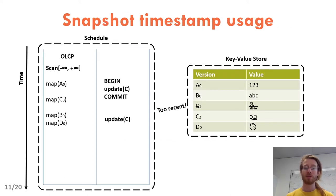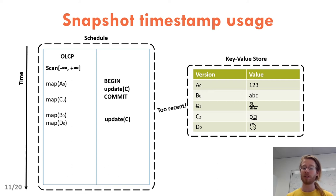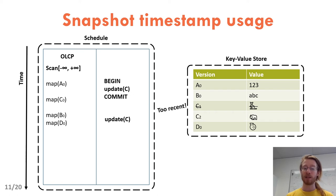OLCP queries use the timestamp of their snapshot to avoid propagating the same item twice. In this example, an OLCP query scans the entire store and C is updated concurrently. After the first update, the first version of C, C0, is propagated to the OLCP query, processed, and then deleted. Then the store only contains the newest version of C, C1. If C is updated again, C1 is not propagated because it is too recent for the OLCP query — we can find this easily by comparing the timestamp of the OLCP query's snapshot and the timestamp of C1. The same operation is done when scanning: when the OLCP query resumes its scan, it will skip C1 because C1 is too recent for its snapshot.